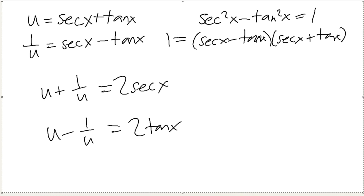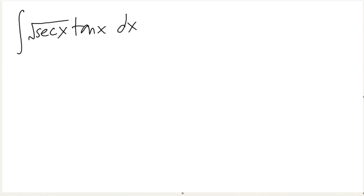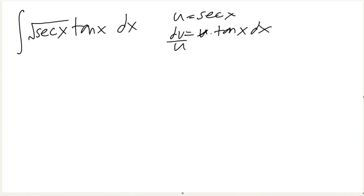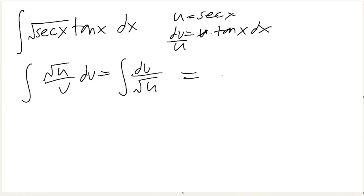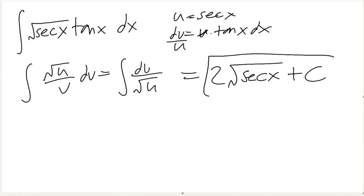We're going to demonstrate all these techniques in the integrals. Let's start with the basic: we want u equals secant of x because it's inside the square root. We don't have a secant x tangent x, so we get du over u times tangent of x dx. So we have root u over u du, which equals du over root u. And this is simply 2 times the square root of secant x plus c. Simple, very easy substitution. Done.